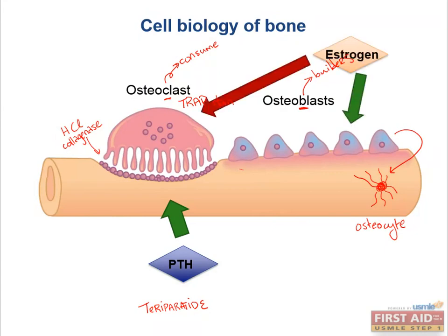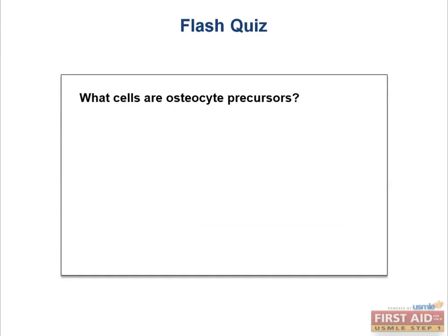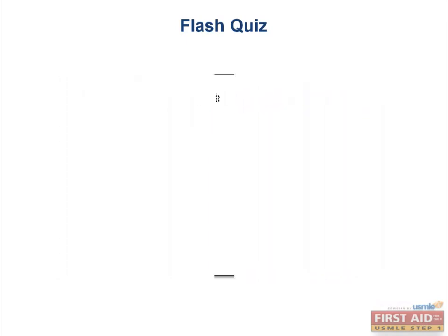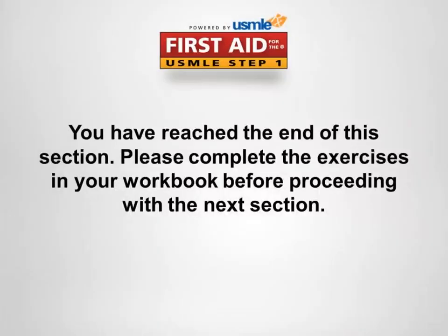Estrogen is also important in bone homeostasis, in that it prevents apoptosis of osteoblasts and osteocytes, while promoting apoptosis of osteoclasts. Overall, it promotes bone anabolism. When is estrogen lacking? Either due to menopause or surgery, and osteoporosis can result. One final flash quiz before we move on to pathology: what cells are osteocyte precursors? Osteoblasts.